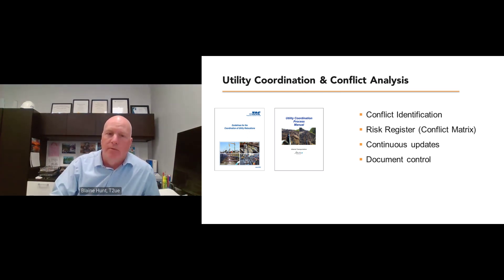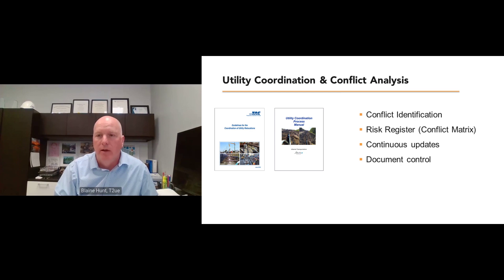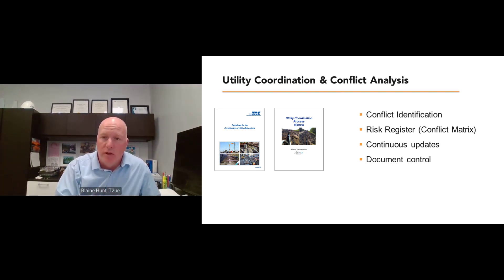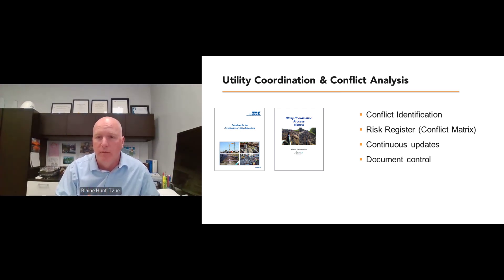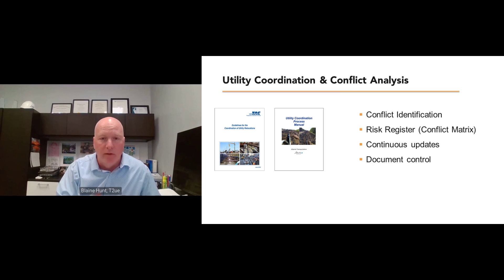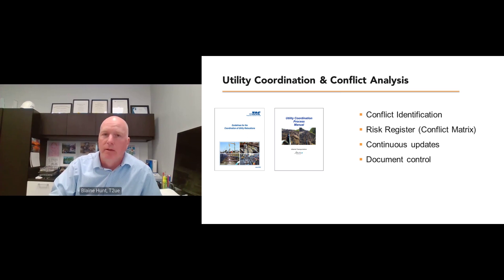A good project example involved pull layouts along a road widening with quality level D information based on limited schematic records. During conflict analysis, it was found the schematic records were based on information the utility owner described as unreliable. During construction, the utility owner would assist with inspections and removals to avoid delays. The advice to the design team was not to move pull layouts to avoid what appeared to be a direct utility conflict — essentially laying pulls directly on top of a quality level D utility line. Further review confirmed the utility's existence and status wouldn't pose a risk to the project.